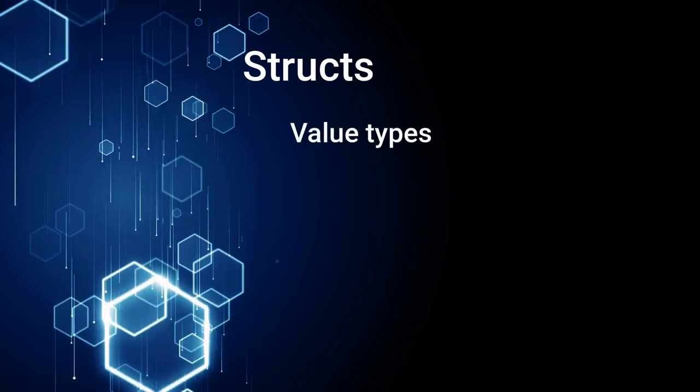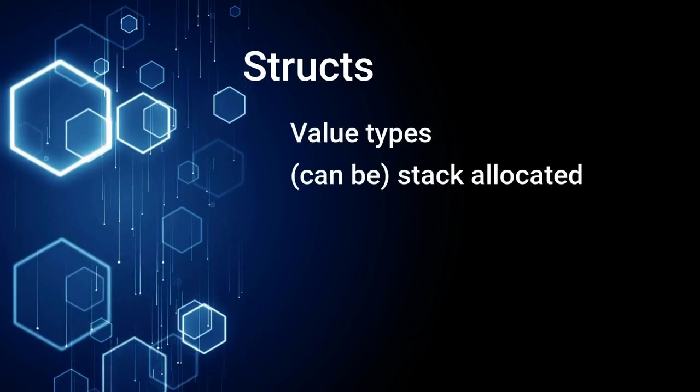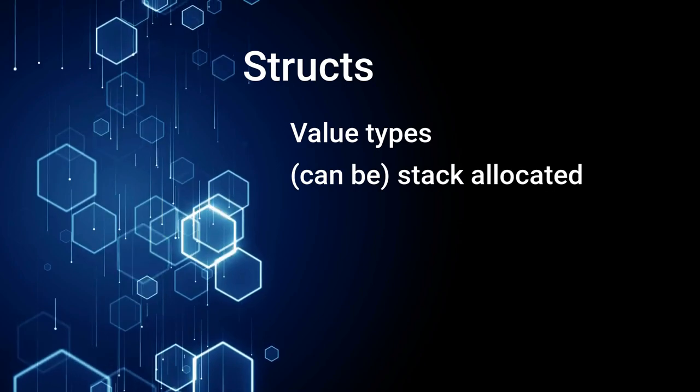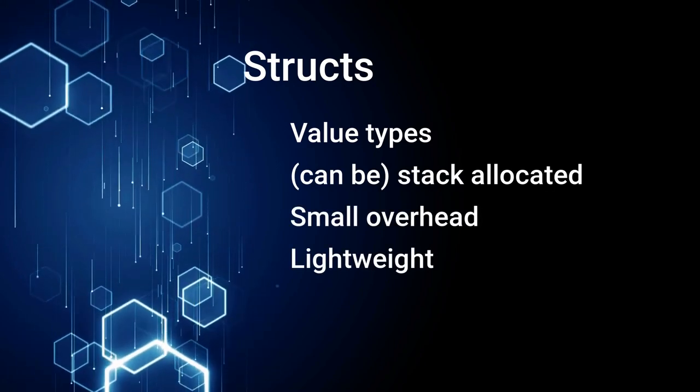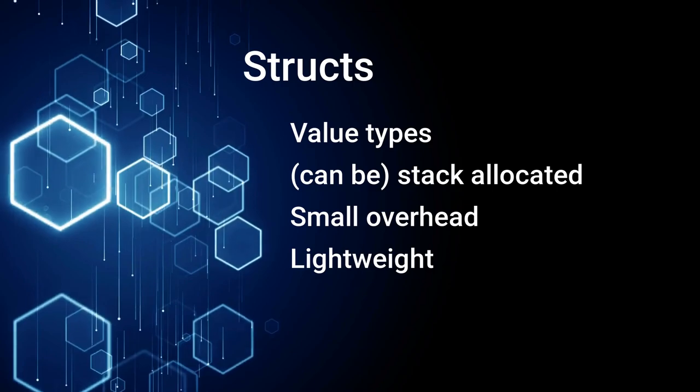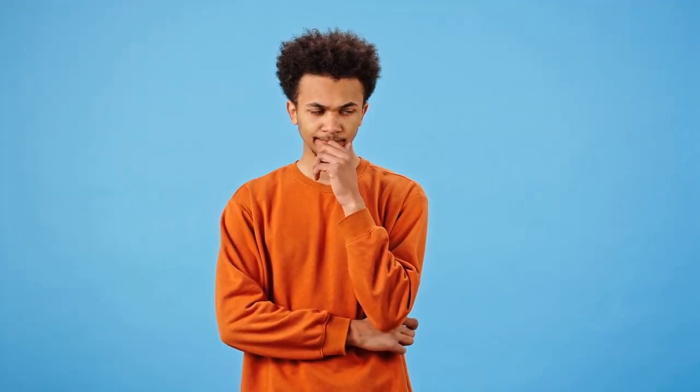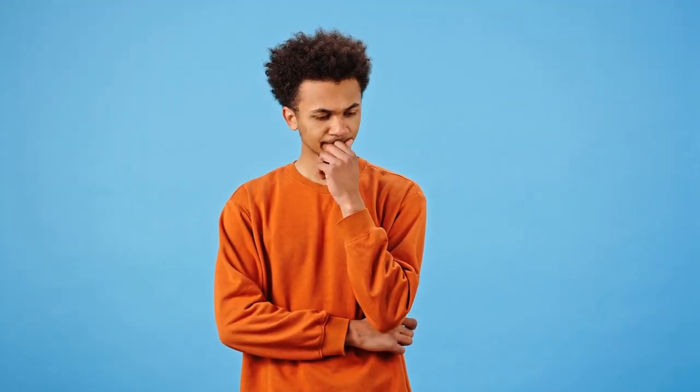Lastly, structs are value types while classes are reference types. This means structs are generally faster to access and don't have the overhead of garbage collection — ideal for lightweight objects like data points or vector positions. When designing your game and deciding which to use, consider the lifespan, scope, performance needs, and modifiability of your data.